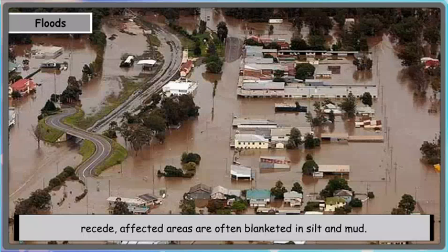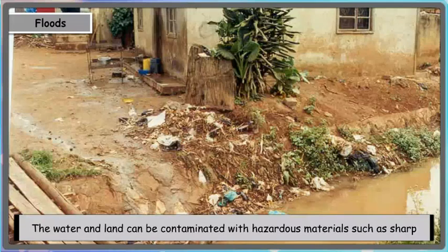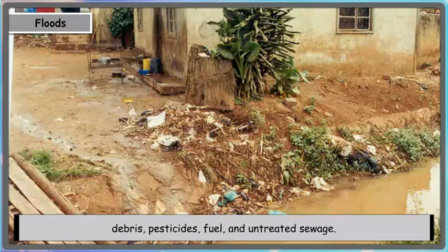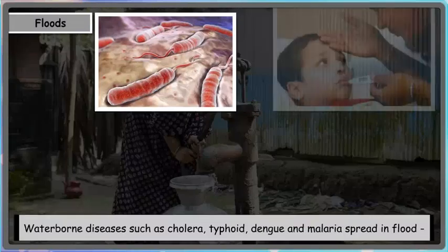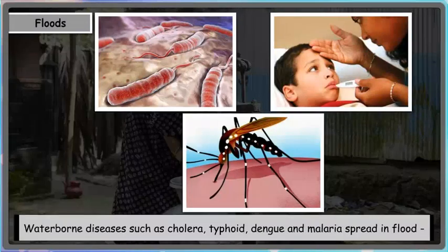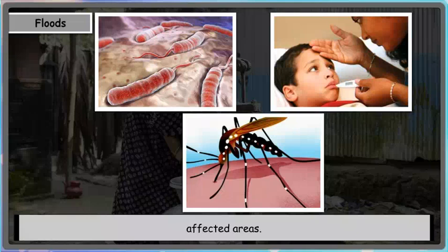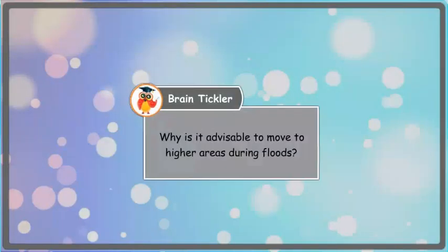When floodwaters recede, affected areas are often blanketed in silt and mud. The water and land can be contaminated with hazardous materials such as sharp debris, pesticides, fuel, and untreated sewage. Water-related diseases such as cholera, typhoid, dengue, and malaria spread in flood-affected areas.